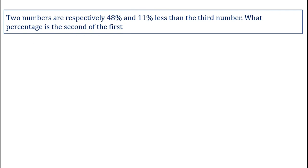Example: Two numbers are respectively 48 percent and 11 percent less than a third number. What percentage is the second of the first? From the given question, since second is compared with first, put the value of second in the numerator and first in the denominator.